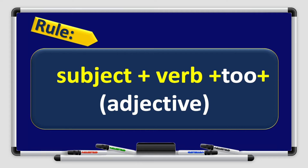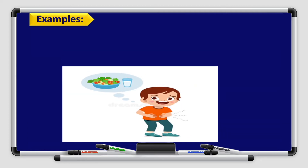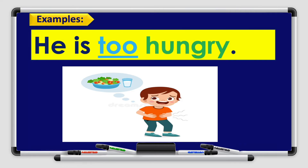The rule again: subject plus verb plus 'too' plus adjective. Take a close look at this picture and try to think of an example using 'too' plus an adjective. He is too hungry. The subject here is 'he,' 'is' is the verb, 'too' is the word, and 'hungry' is the adjective. The adjective 'hungry' describes the boy's status.